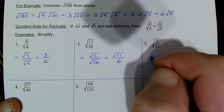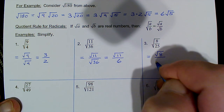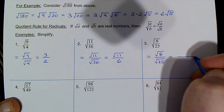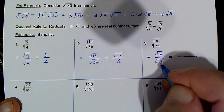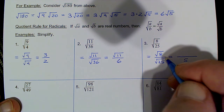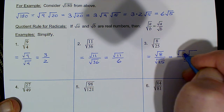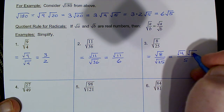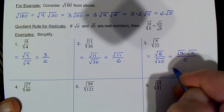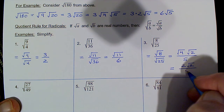For √(8/25): take the square root of the numerator √8 over the square root of the denominator √25. The square root of 25 is just 5 — done with the denominator. But √8 can be broken down because 4 is a factor and a perfect square: break it into √4 · √2. Then the square root of 4 is 2, giving us 2√2 over 5.